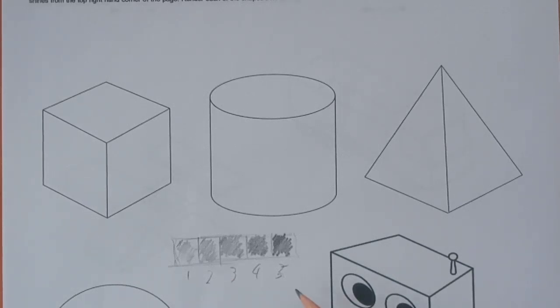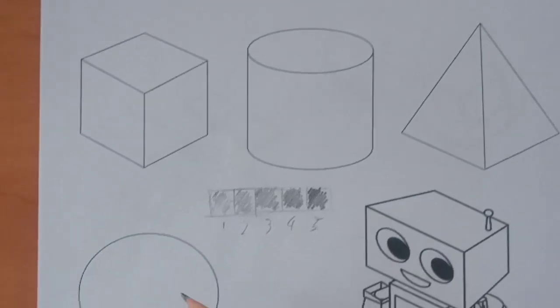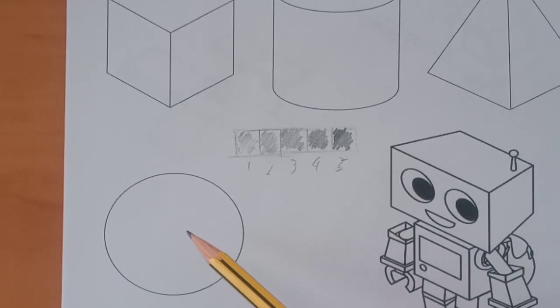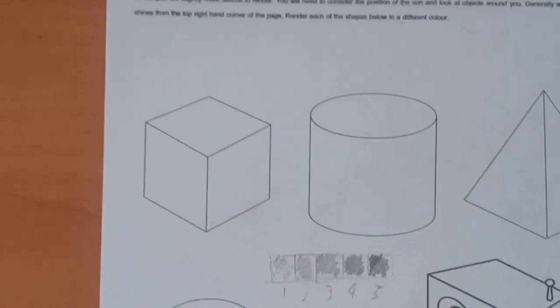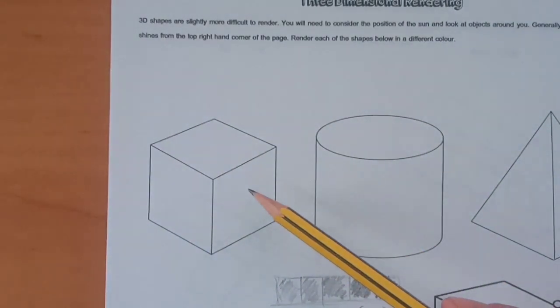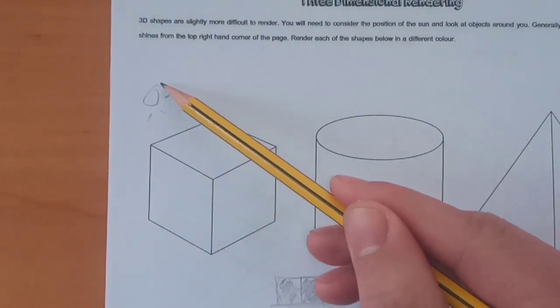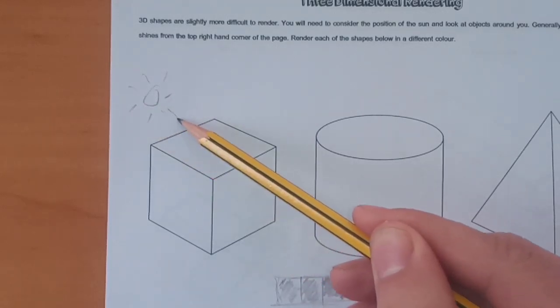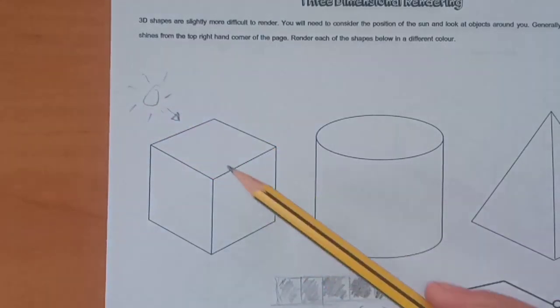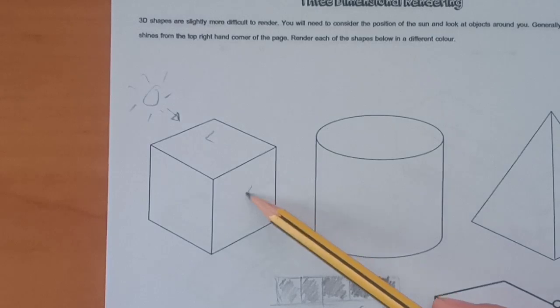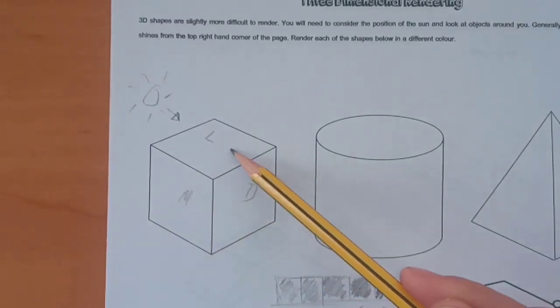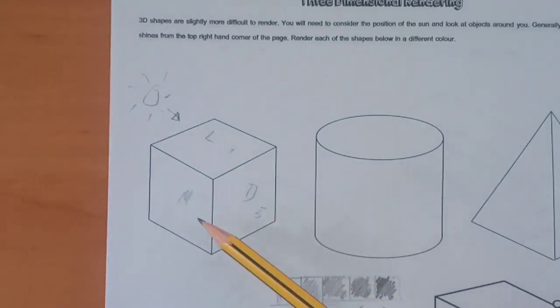This particular one to five set will work for the circle and for that one. You can simply look at the example that was previously demoed. In regards to the square, we're assuming the sun is top left. Light on top, dark on the far side, medium on the left-hand side. So we would be going for one, five, and three.